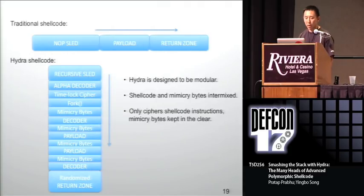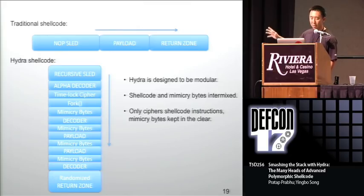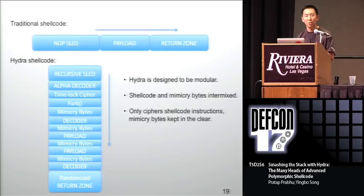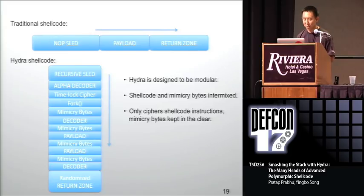The main benefit of using Hydra is that it has all of these different features and they're all modular and work together. On top you have the traditional shellcode — no-op sled, payload, return zone. And then you have Hydra shellcode, which has a recursive sled, alpha decoder, timelock cipher, fork — with payloads and decoders all scattered around. The goal is to make it essentially impossible to recognize that what you're looking at is shellcode, making it impossible or very hard to use signatures, statistical methods, or emulator methods against it.